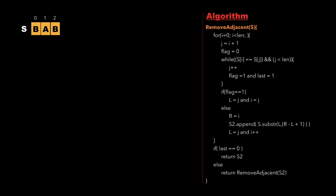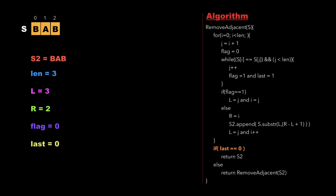Finally, we traverse the string 'bab' from i equal to 0 to len and append all characters into a new string s2. After appending all characters, s2 is 'bab' and the values of flag and last are 0. We check whether last equals 0 — since it is 0, we simply return the string s2, that is 'bab', which is our final output.